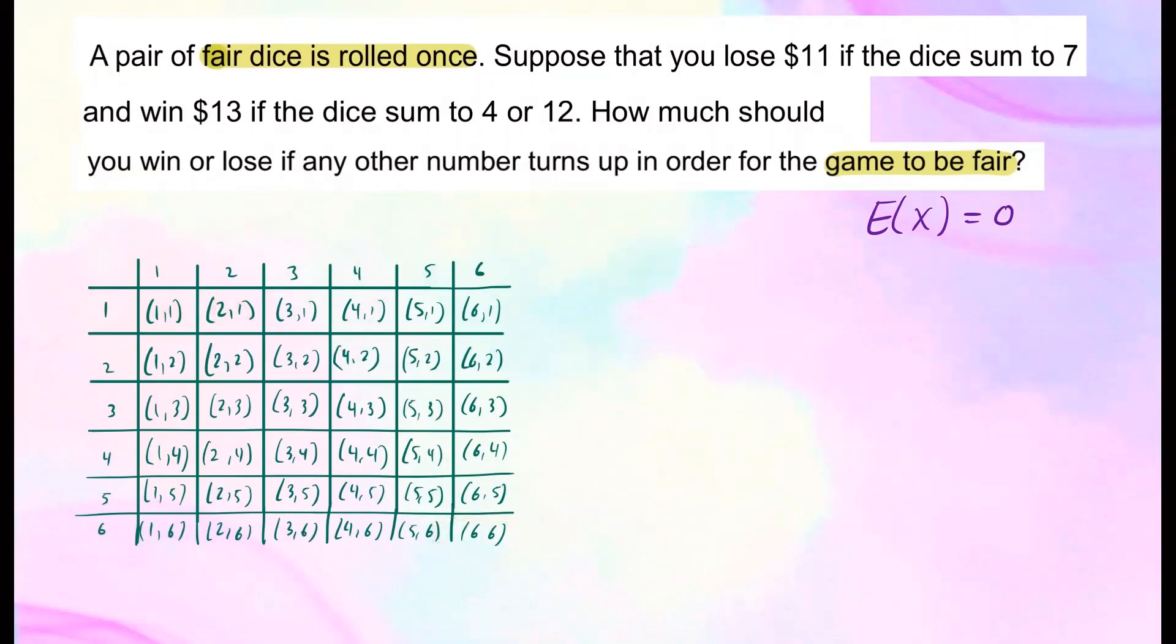So once you have this in mind, now we're saying let's use the random variable x to stand for the payoff amount. So let x be our random variable, stands for payoff amount. We're told that if the dice turns up 7, you lose $11. And then if the dice shows 4 or 12, you win $13.